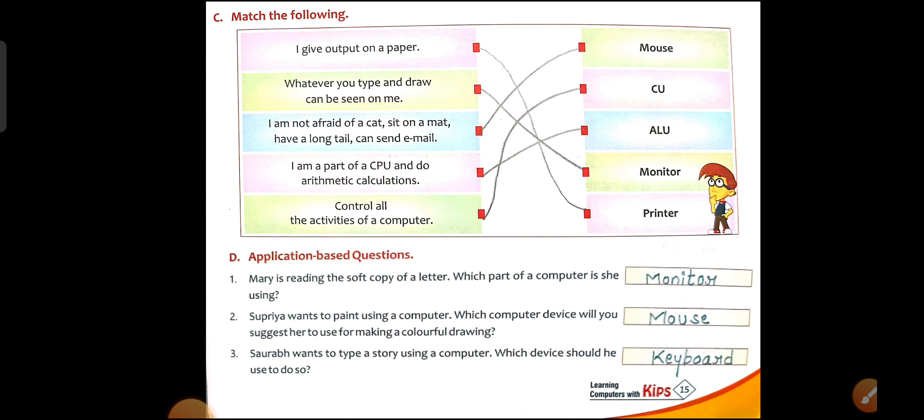Next: I am a part of a CPU and do arithmetic calculations. The CPU has three parts. The one that does arithmetic and logical calculations is the ALU — Arithmetic and Logic Unit. Next: Control all the activities of a computer. The answer is CU — Control Unit. The control unit manages all the activities and processes of the computer.